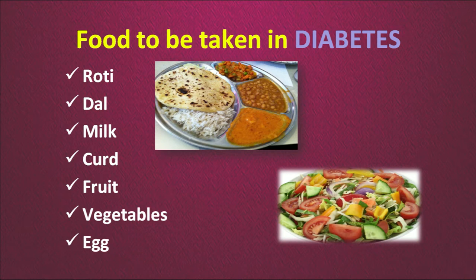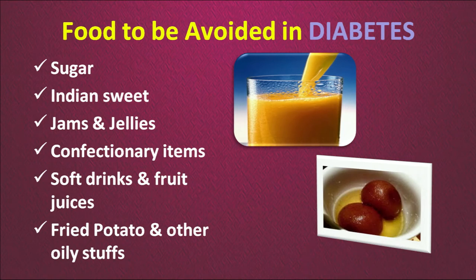What should you eat when suffering from diabetes? You do not have to change much except a few things — regularly take the advisable diet, medication, and exercise. You can have a simple balanced diet: roti, dal, milk, curd, fruits, vegetables, egg, and even non-veg. What you cannot have: sugar, Indian sweets, jams and jellies, confectionery items, soft drinks, fruit juices, fried potato particularly, and other oily foods.